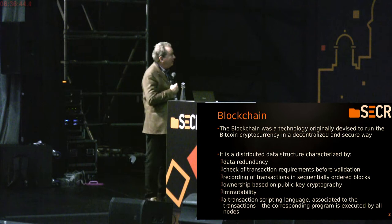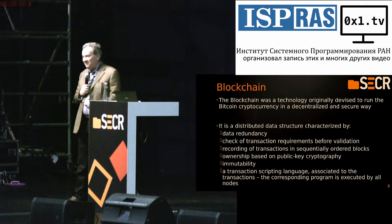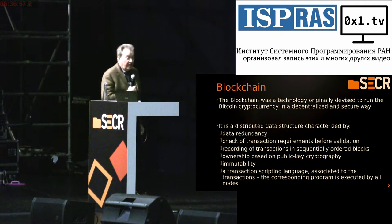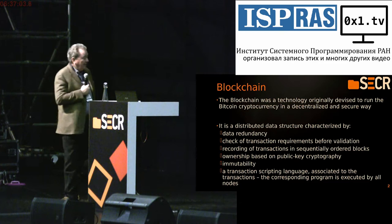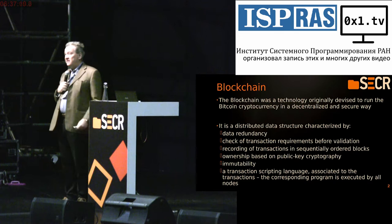What is a blockchain? Well, it's difficult to explain very shortly if you don't know it. Basically, it is a technology originally devised to run Bitcoin and cryptocurrency systems. But later, some people found that it's possible also to use it as a distributed computer to perform programs on the blockchain, which are called smart contracts.